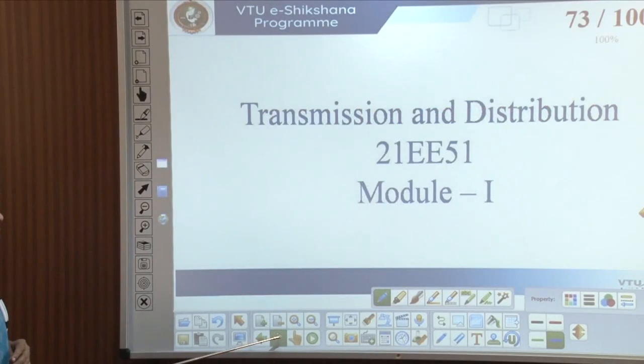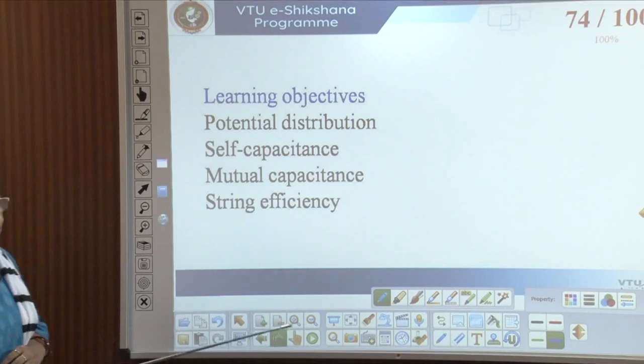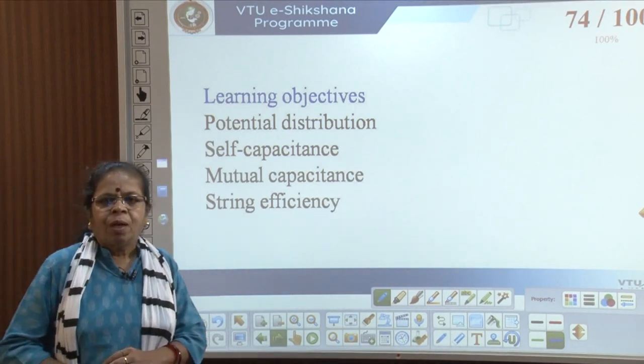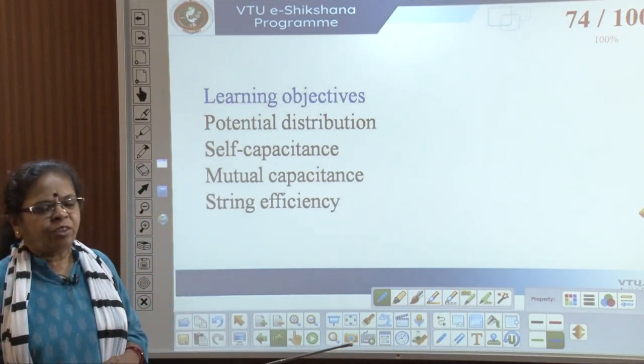Welcome to the sessions on transmission and distribution under the VTU eSectioner program. In the last session, we discussed the design of string insulators — how many insulators to use, the voltage across them, and how to calculate it. In this session, we will look at potential distribution, self-capacitance, mutual capacitance, and string efficiency.